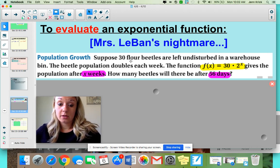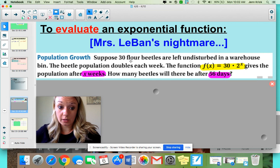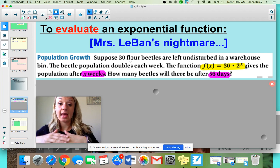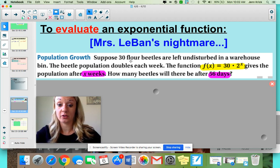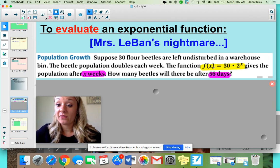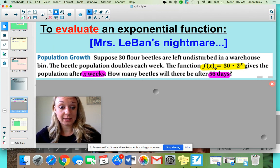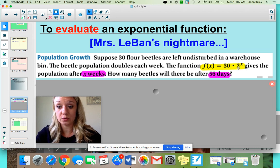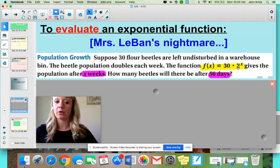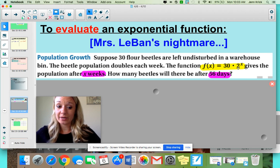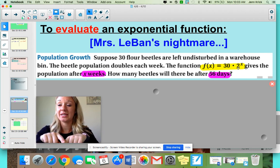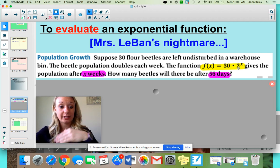So what we're talking about here, we're starting with 30 beetles left undisturbed in a warehouse bin, which I cannot even imagine that. Every week, the population doubles. So it starts at 30 to 60 to 120. I cannot even handle that. The equation here, f(x) equals 30 times 2 to the x power represents the data set that we're looking at. Notice 30 is like your starting population, and it's doubling every week, which is where the two comes from. x represents how many weeks go by. They want to know how many beetles will be there after 56 days.